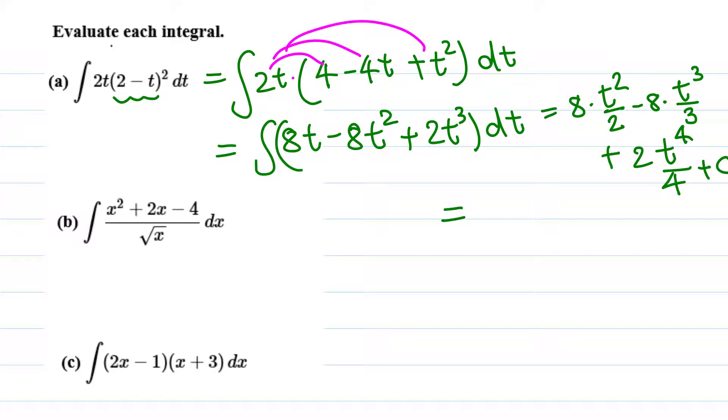Let me simplify and write the final answer here. Because 2 goes into 8 four times, this is 4t² minus 8/3 t³. This is 2/4, the same as 1/2 t⁴ plus C. That's the final answer with plus C.